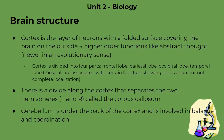The cortex is divided into four parts: the frontal lobe, parietal lobe, occipital lobe, and temporal lobe. These are all associated with certain functions that show localization, but it's not complete localization because some functions are not restricted to one area. There is also a divide along the center of the cortex separating the two hemispheres — left and right. The structure connecting them is called the corpus callosum, an interconnected fiber of neurons pulling the two hemispheres together. We'll look at studies relating to the corpus callosum and seizures in later slides.